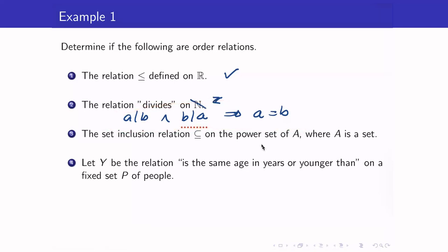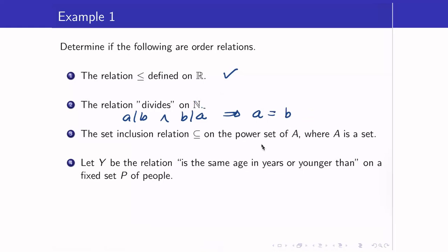If A and B are integers and A divides B and B divides A, what we can conclude is that A is plus or minus B — they could be negatives of each other. So on integers, it will no longer be anti-symmetric. But on the set of natural numbers, it is anti-symmetric. For relation 3, we have already shown that the subset relation is anti-symmetric.